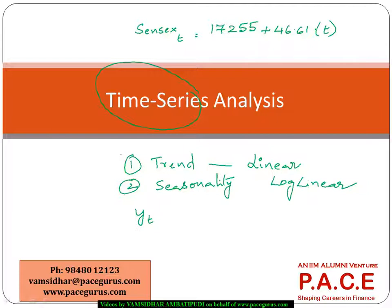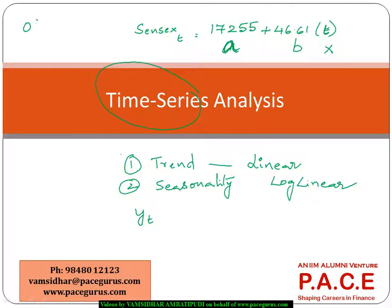The mechanism is exactly like simple linear regression — a plus bx — except instead of x we take time in the form of 1, 2, 3, 4, and a is the intercept itself. This mechanism, just to reiterate, is an OLS mechanism — Ordinary Least Squares method of doing the regression.